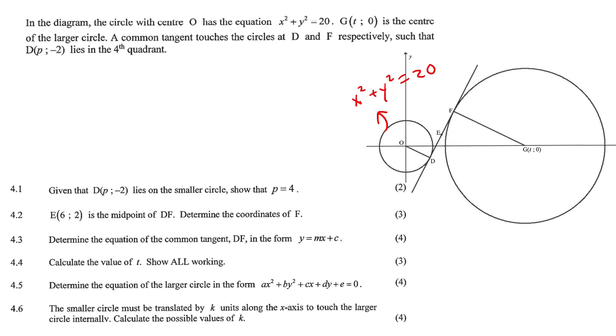G(t,0) is the center, a common tangent touches the circles at D and F, such that D, which is - okay, that's interesting. So that's information that they haven't shown us. P minus 2 lies in the fourth quadrant.